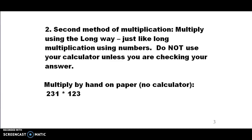The second way of multiplication we're going to look at is something very similar to what you've already done before — probably learned it in about the third grade — which is multiplication of numbers with more than one digit. What I'd like you to do is take a piece of paper, pause the video, and multiply by hand 231 times 123. Please don't use a calculator on this one. Do that multiplication, pause the video, and then we'll go ahead.